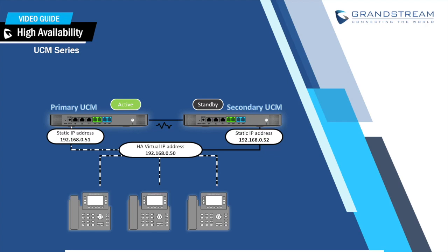This feature was added in firmware version 1.0.9.x. In an HA setup, there are two UCM devices where one UCM is in active mode and the other UCM is in standby mode. The UCM in active mode will sync its configuration and data with the standby UCM in a real-time manner. Using the heartbeat connection, the standby UCM will regularly monitor the UCM in active mode for any hardware or software issues to immediately take over and become the active UCM. The HA feature offers automatic call recovery that keeps ongoing and new calls alive without service interruption.